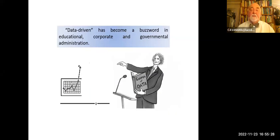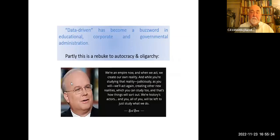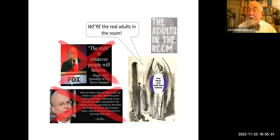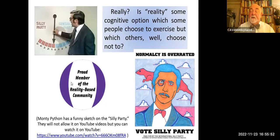Data-driven has become a buzzword in educational, corporate, and governmental administration. 'If we just have the numbers, we'll know what to do.' Partly this is a rebuke to autocracy and oligarchy. Who are the real adults in the room? Really — is reality some cognitive option that some people choose to exercise but which others will choose not to? Are there some people who are members of the reality-based community and others who are adherents of the silly party?